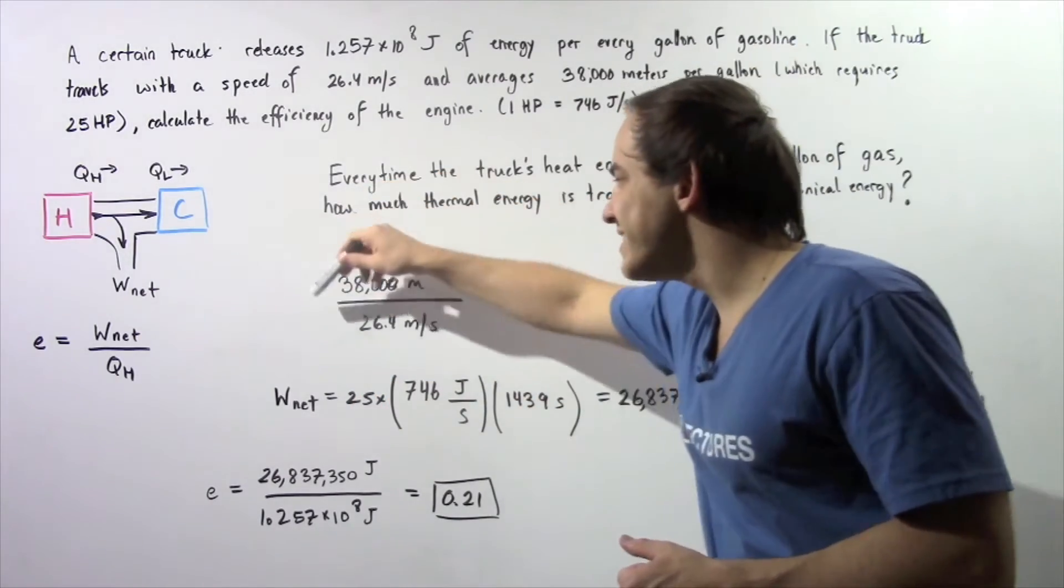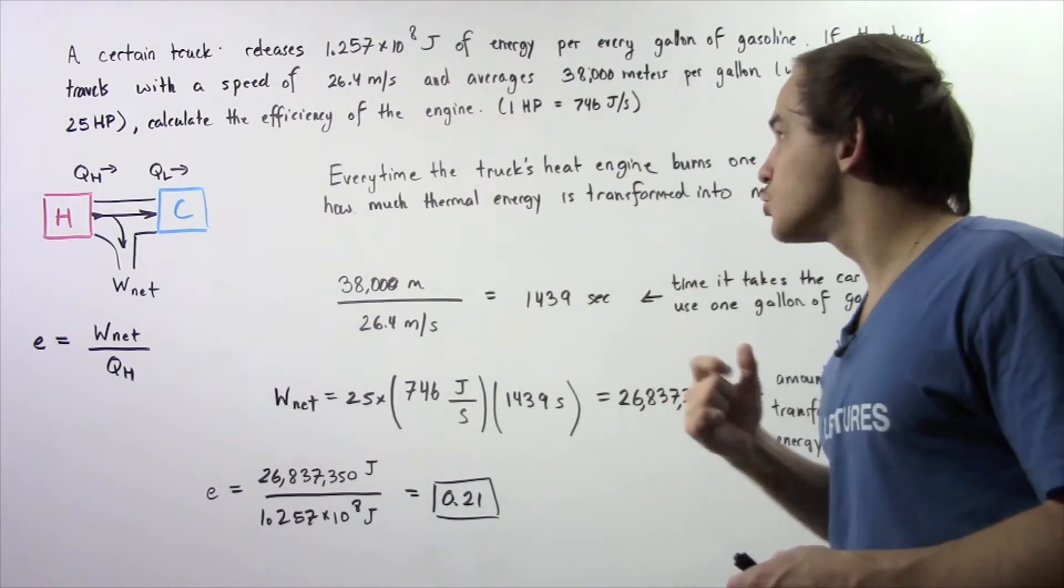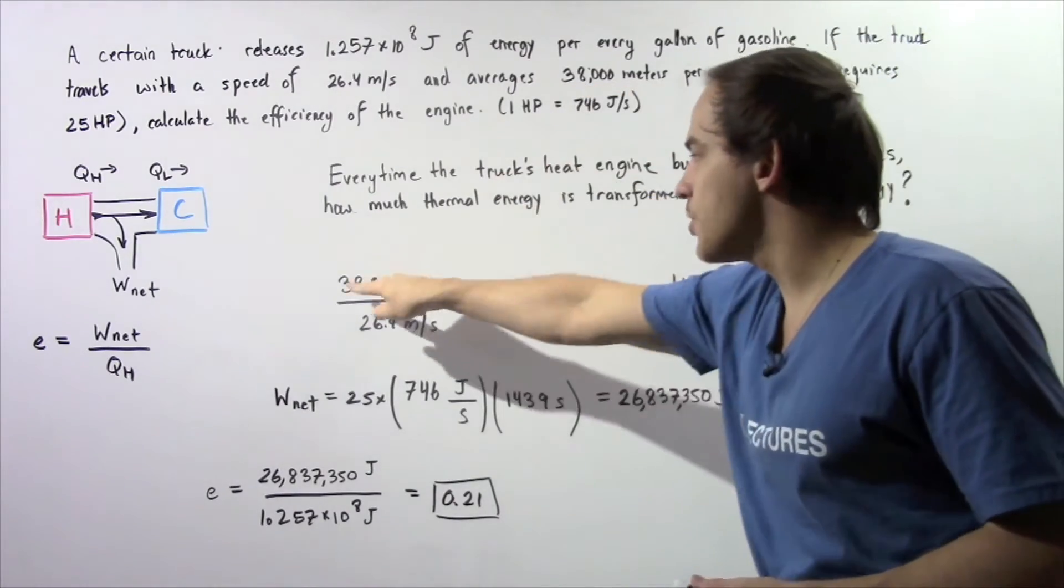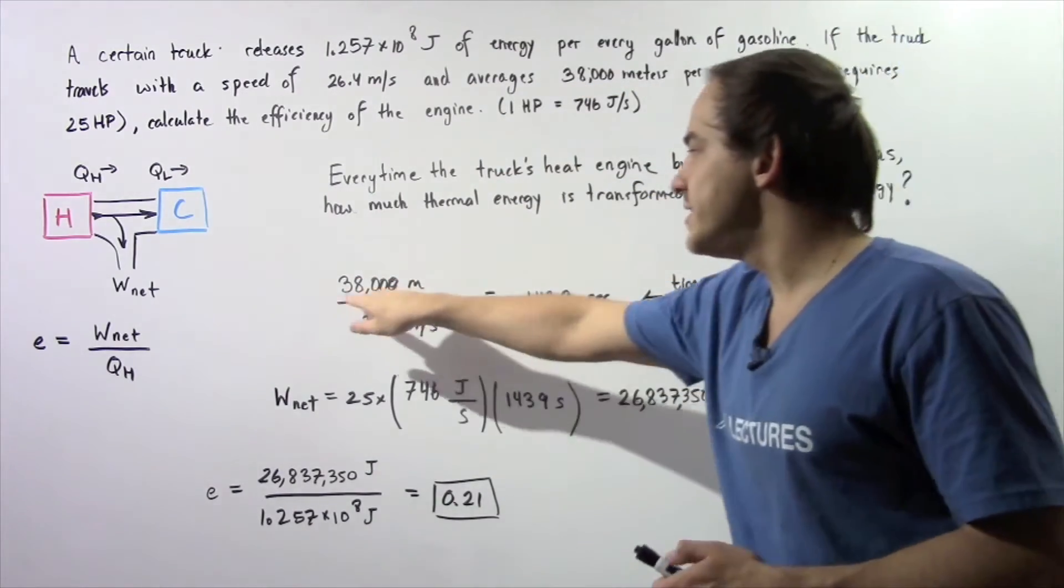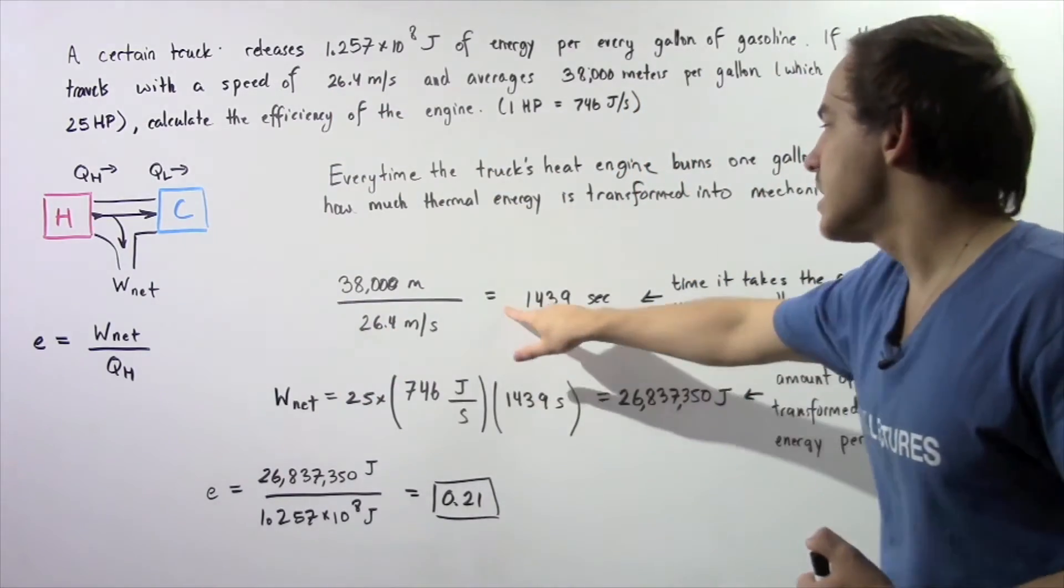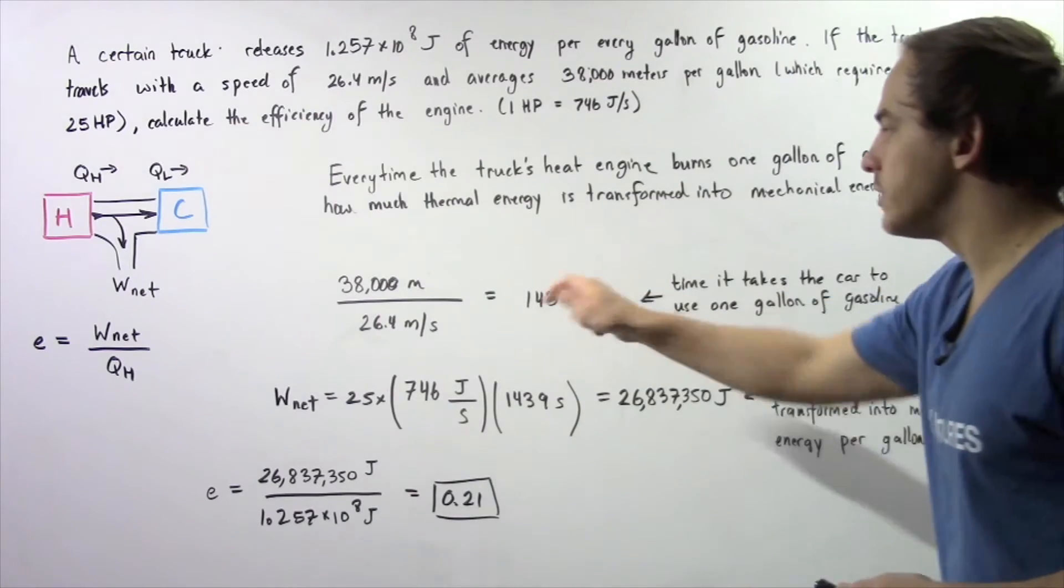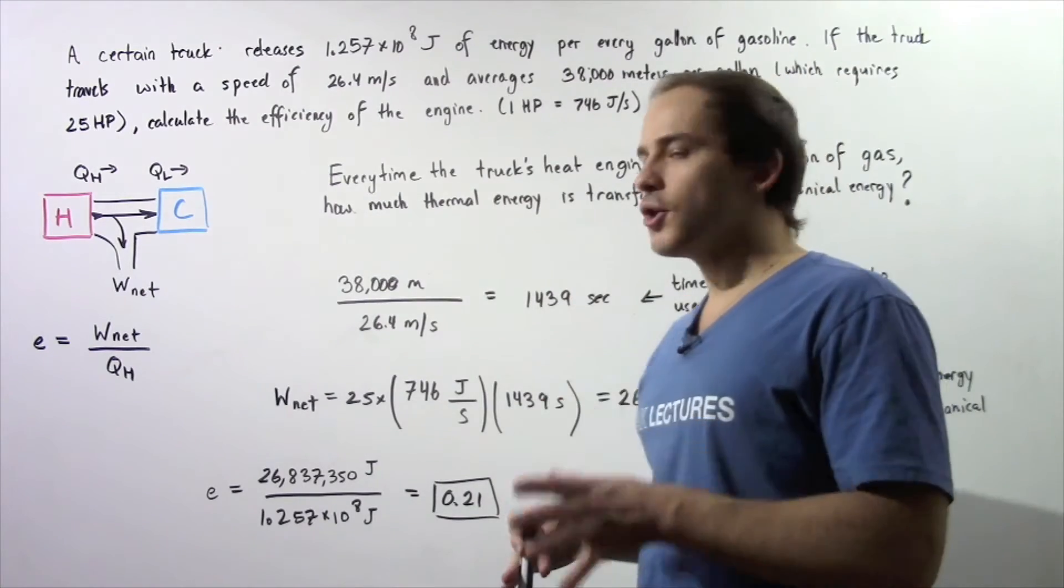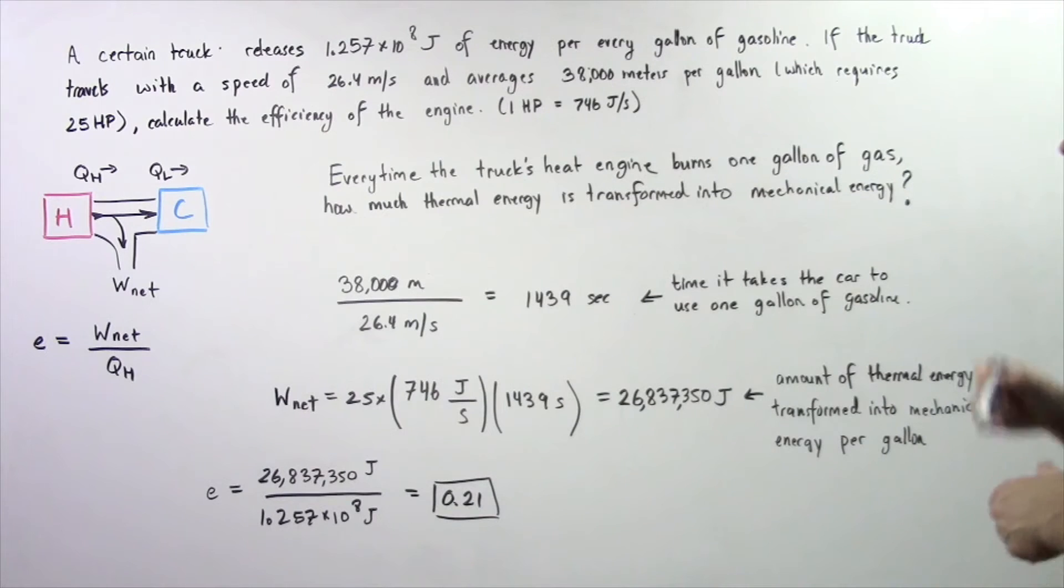The total distance our car travels when it burns 1 gallon is given to be 38,000 meters. We take that value, divide that by the speed, and that gives us the seconds. So 1439 seconds. This is the time it takes the car to use 1 gallon of gasoline.